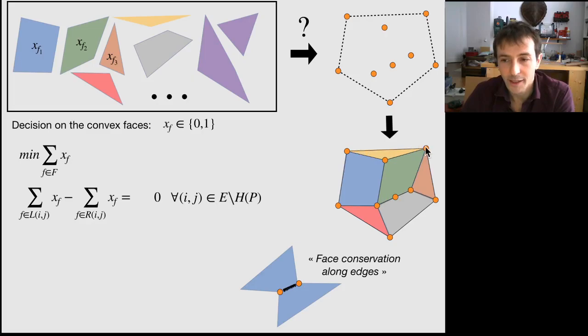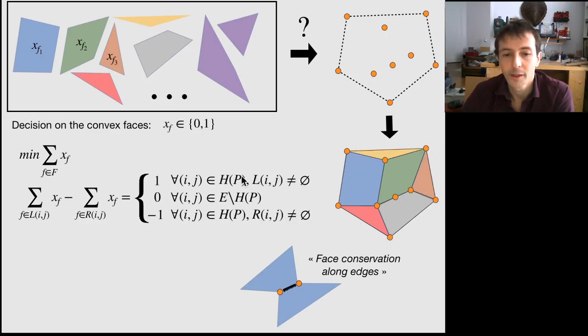Now this is true for the edges inside the hull. But when you consider edges on the hull, on the convex hull, then these edges will either produce or consume faces. So you will have a 1 or minus 1.